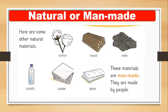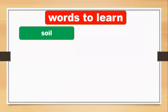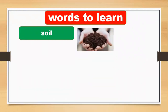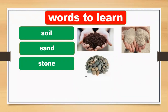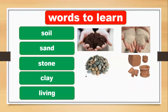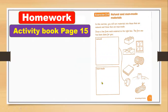Let's review. Soil — is it natural or man-made? It comes from nature, so it's a natural material. Sand is a natural material. Stone is also a natural material. Clay is a natural material. Living things like animals are all natural materials.